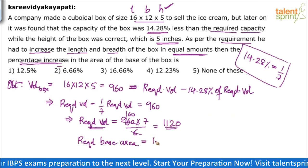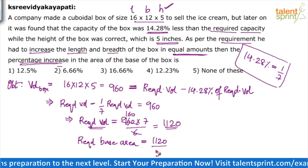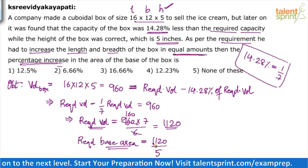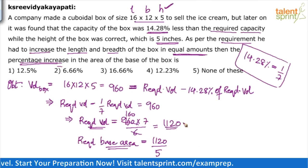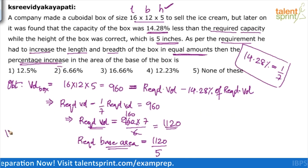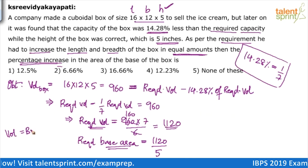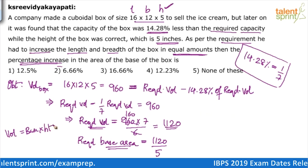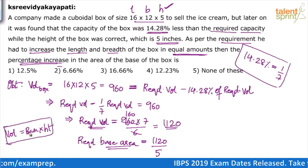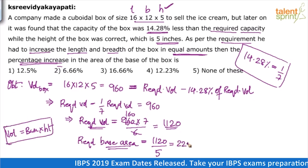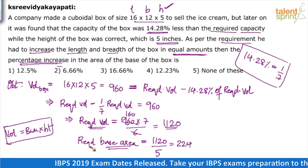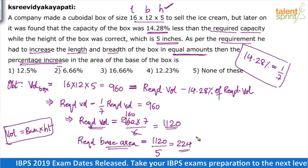The required base area is 1120 ÷ 5. Since volume = base × height, and height is 5, the base = volume ÷ height = 1120 ÷ 5, which comes out to 224. So the required base area is 224.